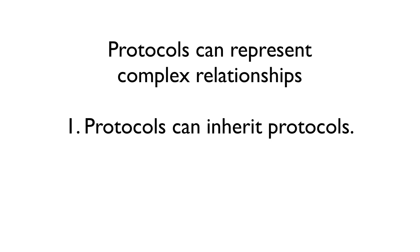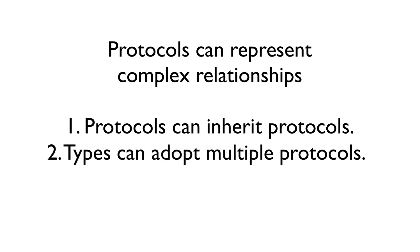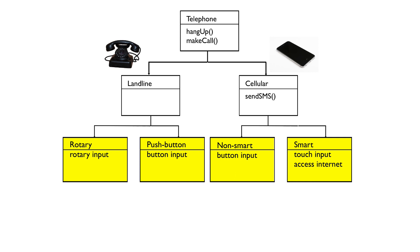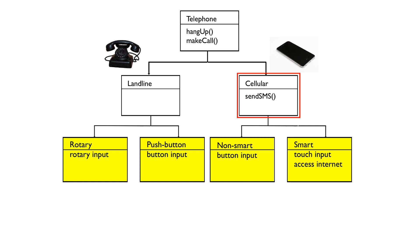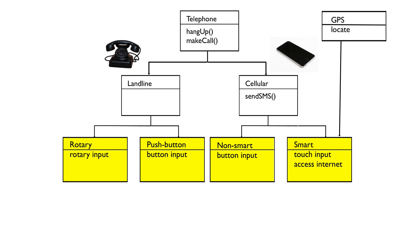Secondly, and this is huge, types can adopt more than one protocol. So let's go back to our example. The yellow boxes represent concrete types, whereas the white boxes are now protocols. So smartphones, for example, in addition to adopting the cellular protocol, could also adopt a GPS protocol, a fingerprint reader protocol, etc.